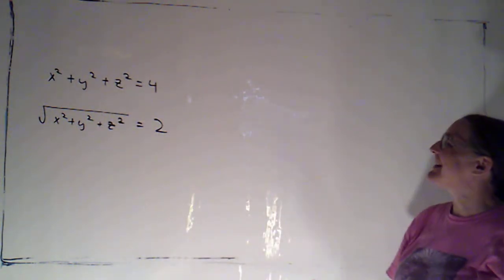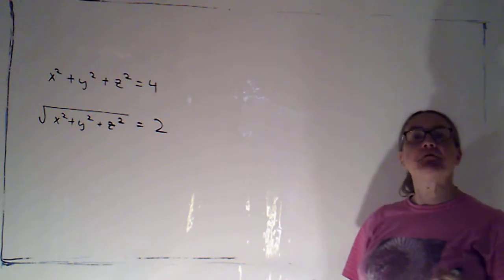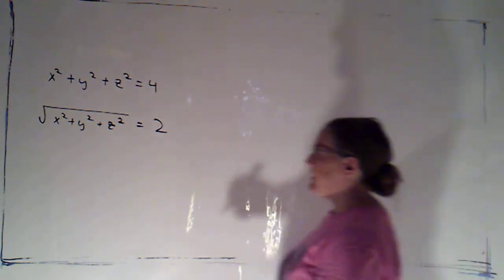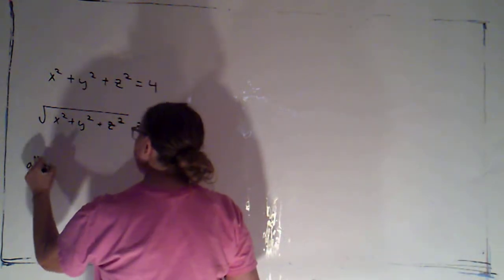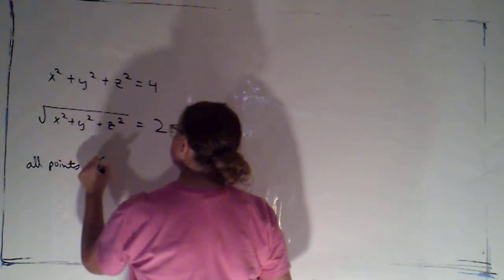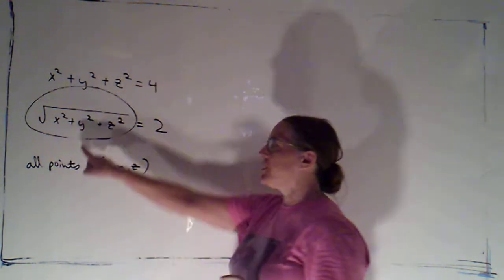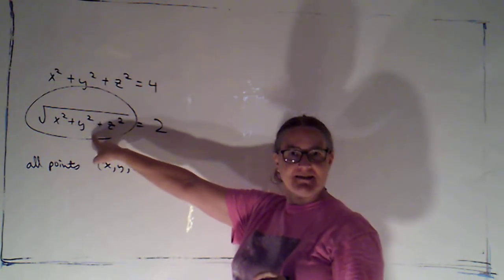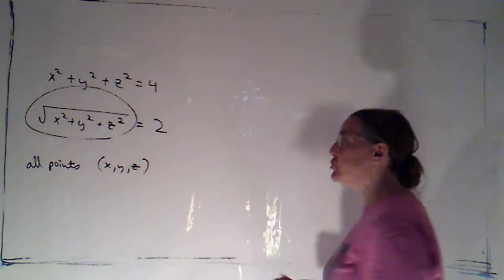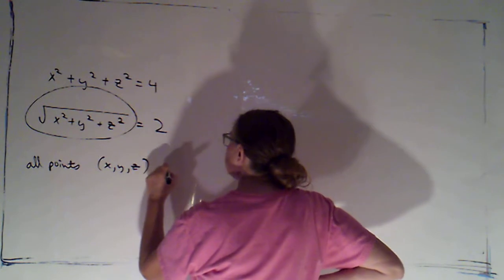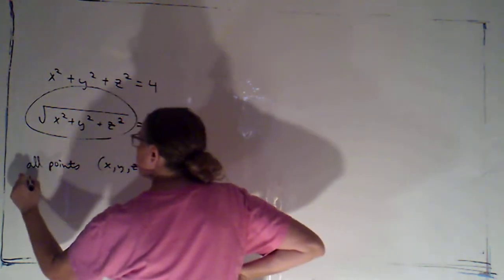Welcome back. Okay, so this is the set of all points x, y, z whose distance from the origin, because that's the formula for the distance to the origin, is two. So all points x, y, z whose distance to the origin is two.